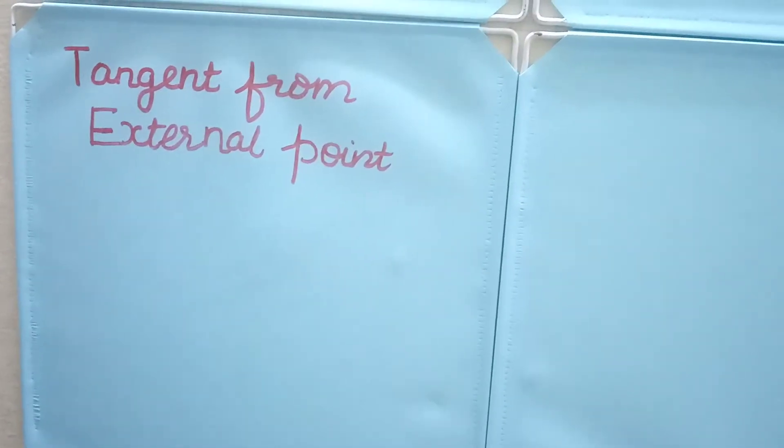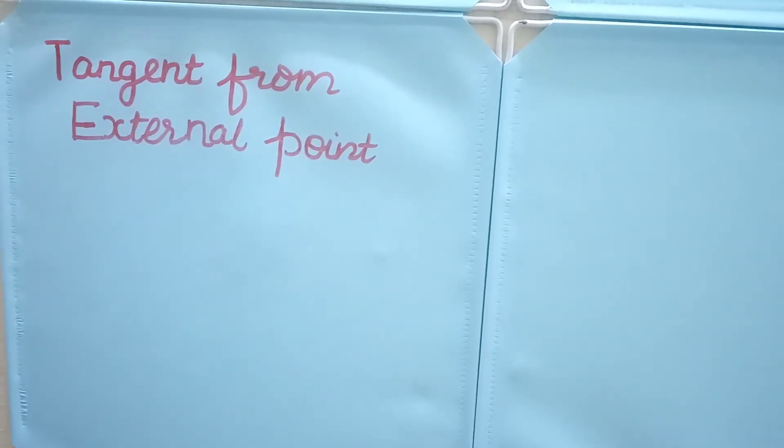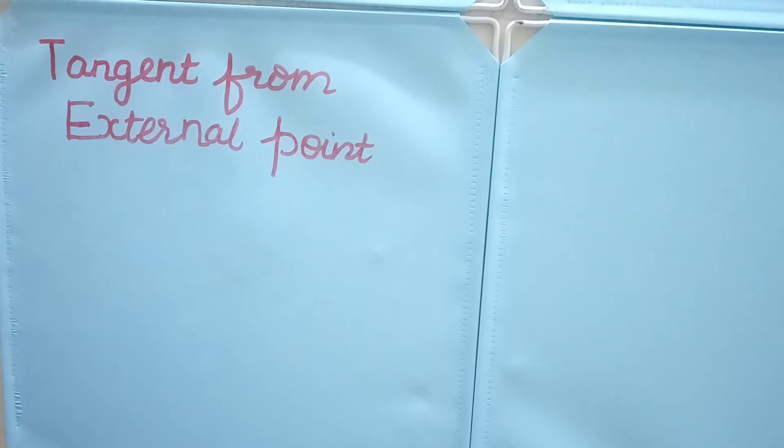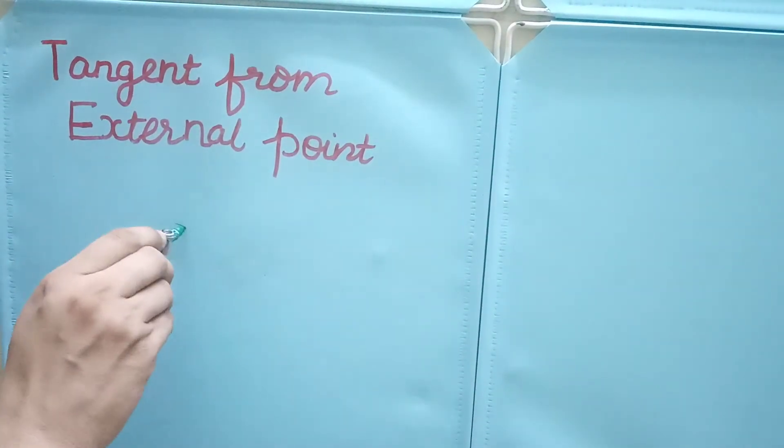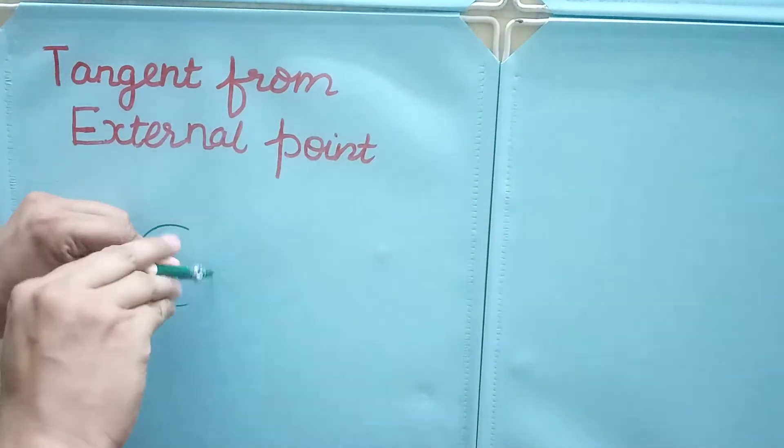Hello and welcome to my YouTube channel. In this video we will be discussing how to draw a tangent from an external point to a circle. Suppose we are given a circle of some radius. We will draw the circle first.